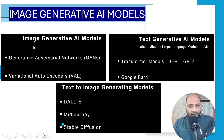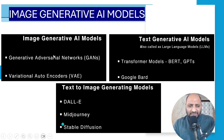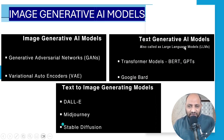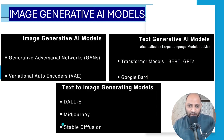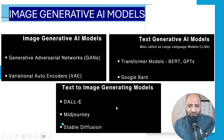What are the generative AI models? We have three categories. First, image generative AI models, which we build with GANs and VAE. Second, text generative AI models — the very popular large language models such as OpenAI GPT, also called transformer models, Google's BERT (now changed to PaLM), and Meta's LLaMA. Third, text-to-image generative models like DALL-E, Midjourney, and Stable Diffusion.